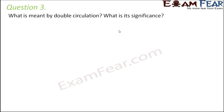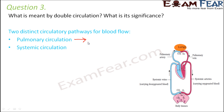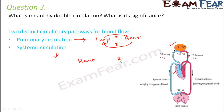Question number three: what is meant by double circulation and what is its significance? When two distinct circulatory pathways exist for the flow of blood, that is called double circulation. In humans, the two pathways are pulmonary circulation and systemic circulation. In pulmonary circulation, oxygenated blood comes from the lungs to the heart and deoxygenated blood goes from the heart to the lungs. In systemic circulation, oxygenated blood goes from the heart to different parts of the body and deoxygenated blood returns from the body to the heart.